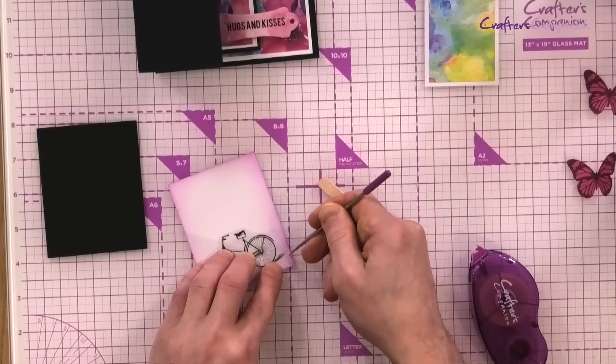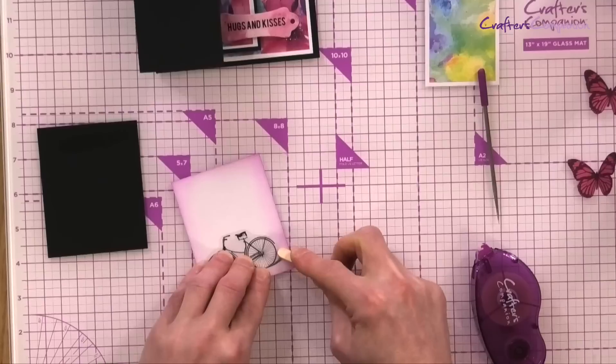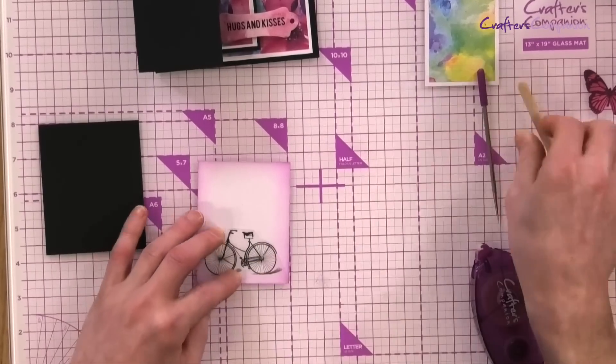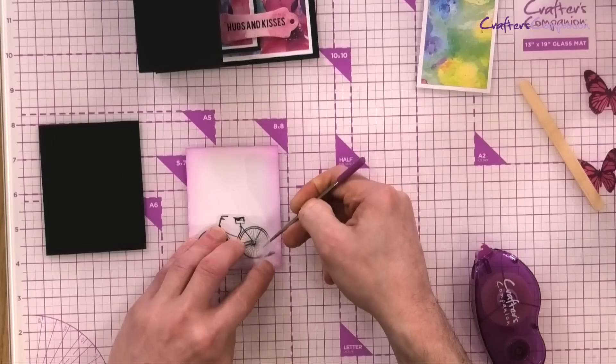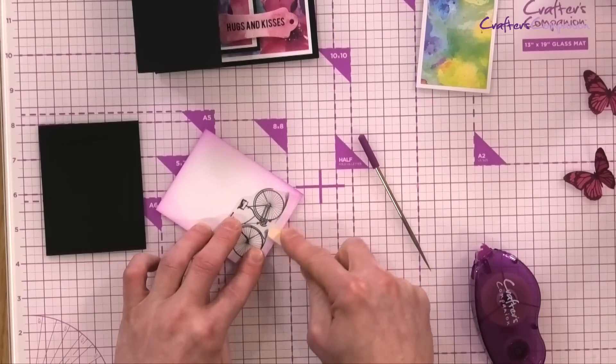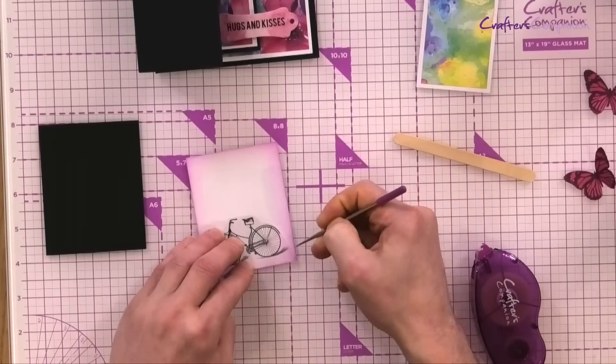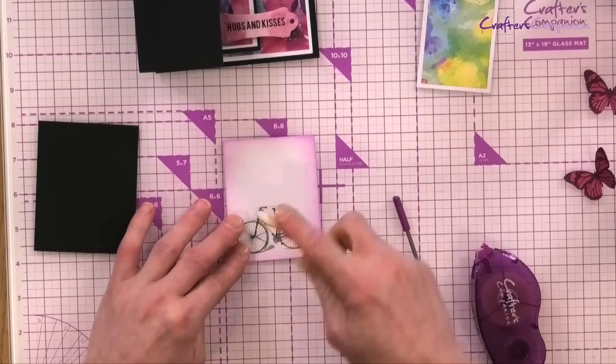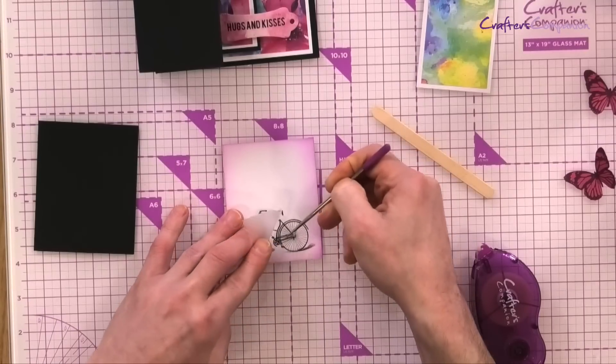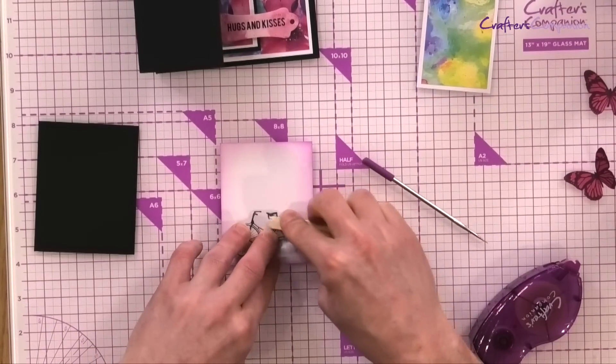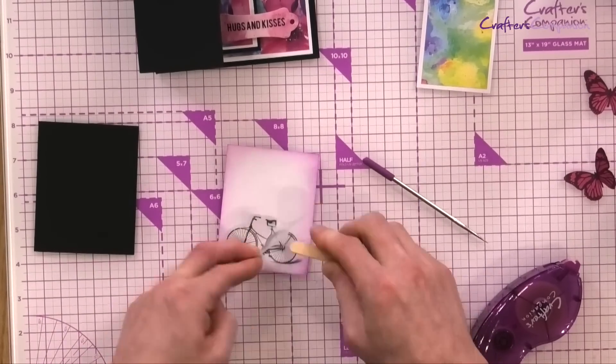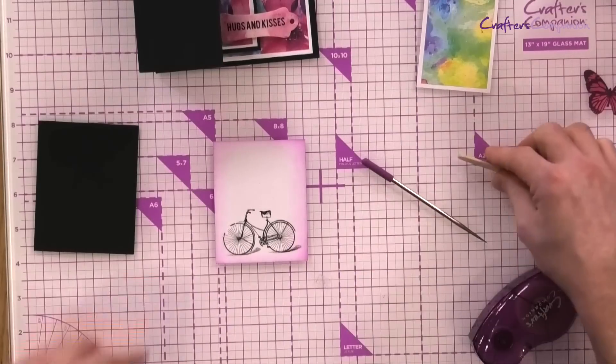So when you think that you've got enough, you can just have a look, peel the backing off and anything that you've missed, just go over. It doesn't matter how many times that you need to go over it, just to make sure that it's all down. And just start to peel, slowly peel back any bits that you see that's missing. Then again, just go back, pull away. So we're coming along just nicely. Work your way along, anything that you're missing. There we go.